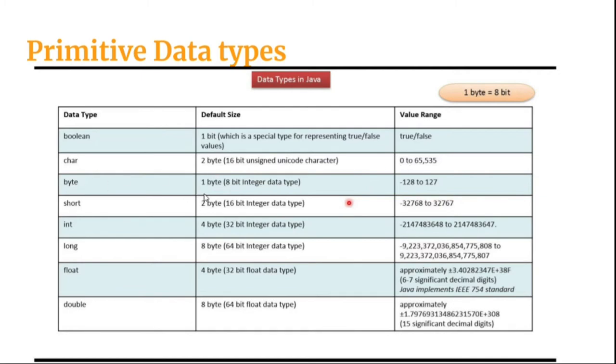Byte can hold one byte of information and it ranges from minus 128 to 127. Same goes with short. It can hold two bytes of information and range from this to this. You can go through this entire chart and you get a rough idea what kind of value a particular variable can hold. Once you start writing codes, you will get this idea when to use what kind of data type.